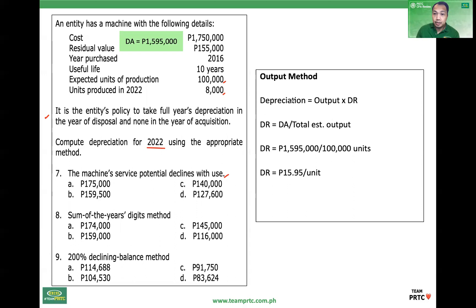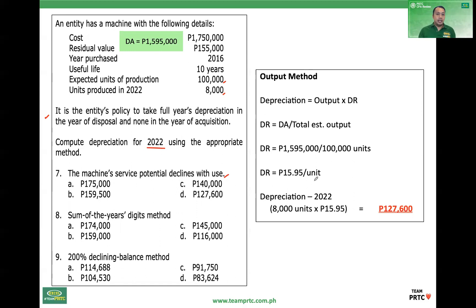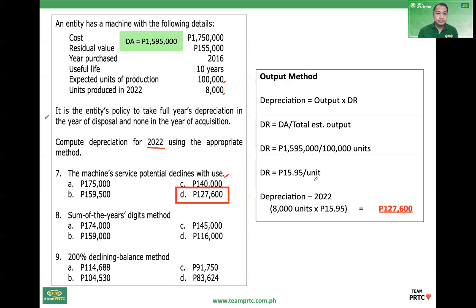To get depreciation: output times rate. So 2022 depreciation output is 8,000 units times the rate of $15.95. Number seven uses the output method, which is appropriate when the asset's service potential declines with use.